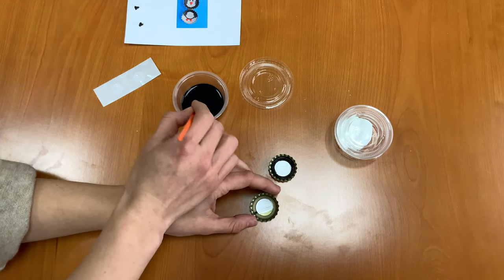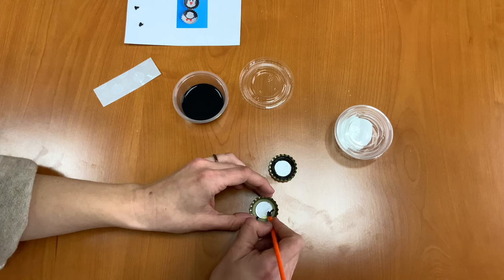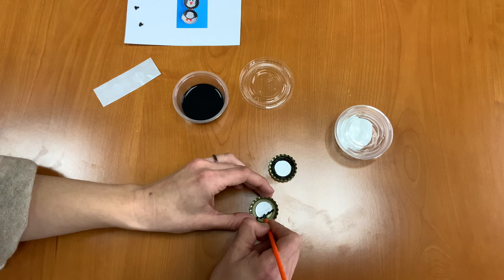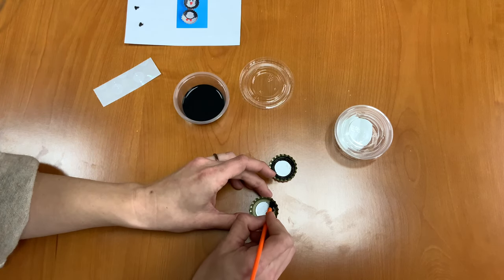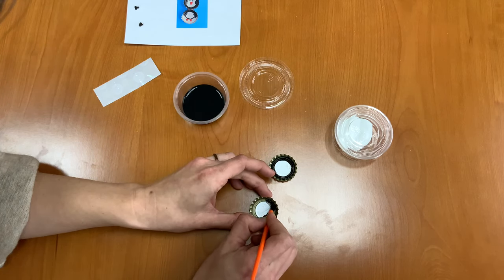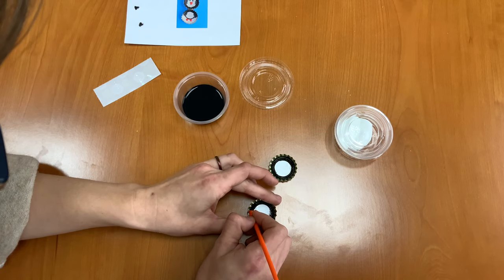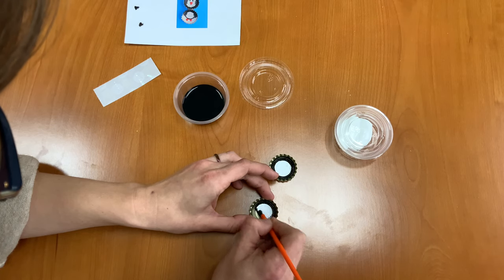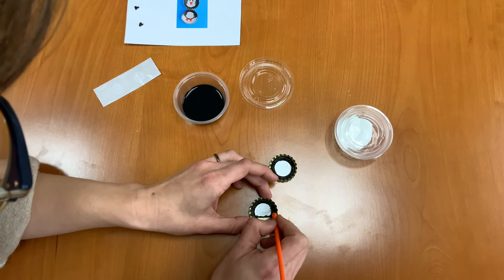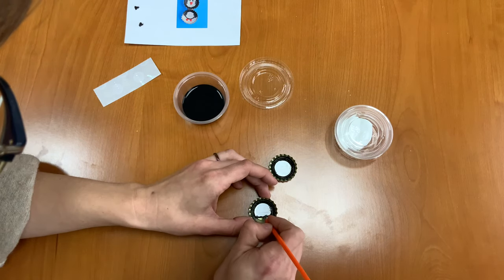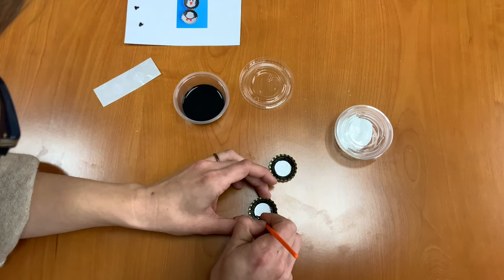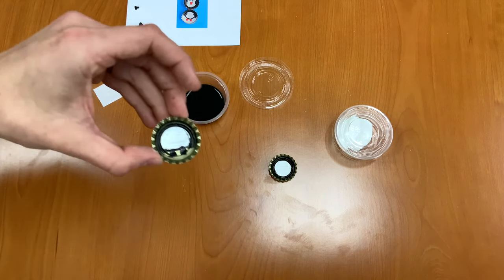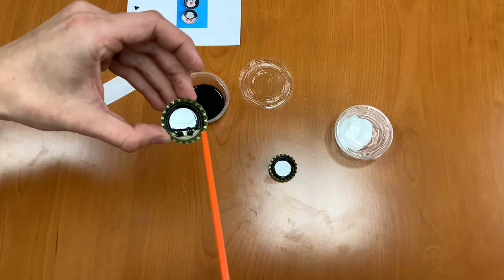And on the bottom one we want to do the same thing except not go all the way around. We just want to outline the bottom of the penguin's body right here and then go around on the top. Now I'm going to add two little feet at the bottom. One, two. Now there's my penguin's body, and you can see his two little feet at the bottom.